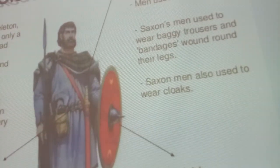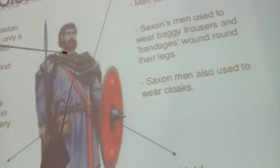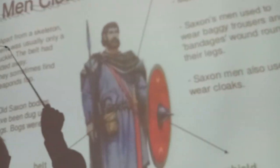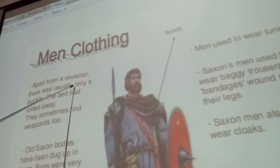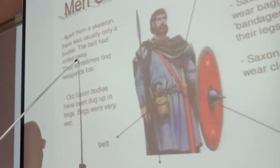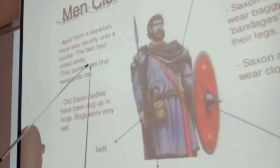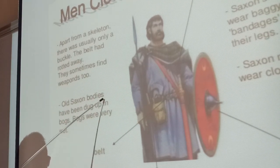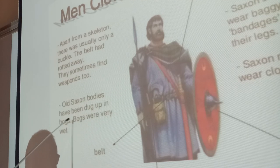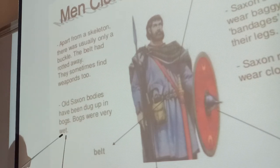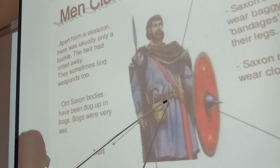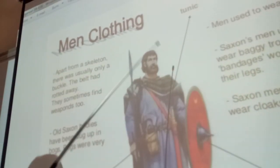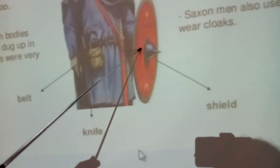Men's clothing: apart from the skeleton there was usually only a buckle — the belt had rotted away. They sometimes find weapons too. Saxon bodies have been dug up in graves. This one is a belt, this one is a knife, this one is a tunic, and here is the shield.